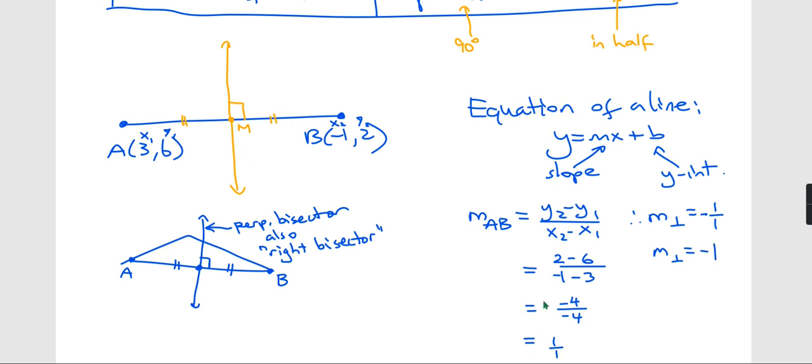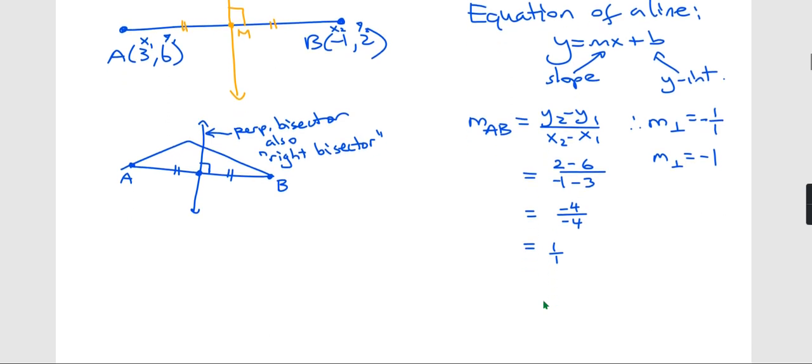So the slope of my perpendicular is negative 1. That's really good because for the perpendicular bisector, I now have a slope. I just need a point to plug in to figure out the b.